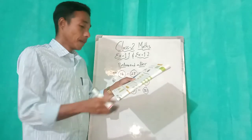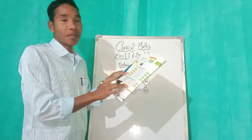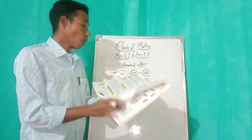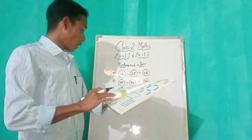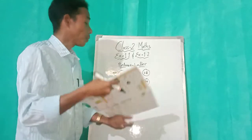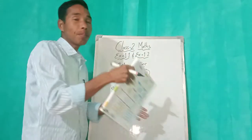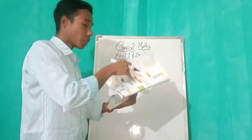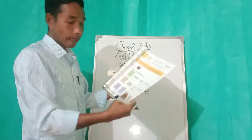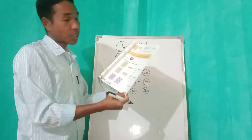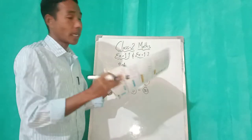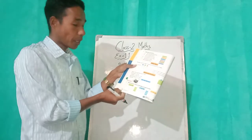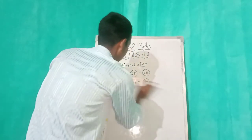D, E, F — you try to do by yourself. Now we'll go to Exercise 1.2. Open page number 9. It's very easy — you do page 9 by yourself. Today I'm going to teach page number 10.